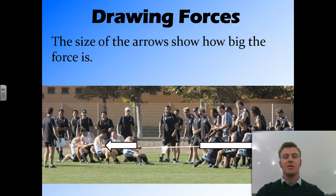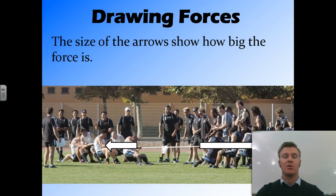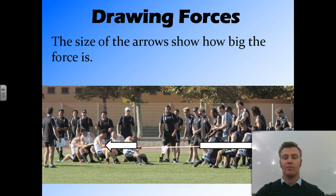These two arrows are different sizes because the blue team is pulling harder than the white team, which is why some people at the back of the white team have fallen over. The blue team is winning because they've put more force onto the rope. We show the amount of force by the size of the arrow.